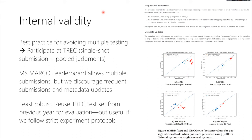On internal validity, one of the main questions is whether people are actually overfitting to the test set. The TREC track has the strongest protection against this: every year there's a submission deadline after which the test set judgments haven't even been collected yet — participants have the training data but no access to test set labels. After all submissions are complete, NIST uses pooling to get documents judged. This is one of the strictest forms of blind evaluation possible.